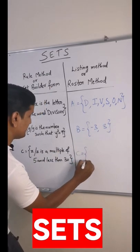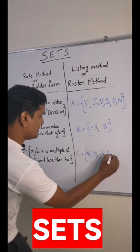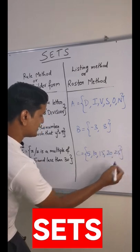Here it will be the table of five: 5, 10, 15, 20, and 25. You cannot write 30 because it is less than 30.